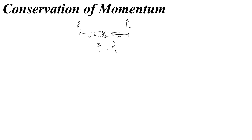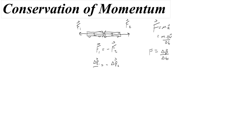Earlier we talked about how Newton's second law, F equals ma, can be thought of as not acceleration, but instead a change of velocity over a change in time. Mass times the change of velocity is a change in momentum. So force can be thought of as the change in momentum over the change in time. We rewrite our equation of F₁ and F₂ with delta P's: the change in momentum of the first car over time equals the negative change in momentum of the second object. Since the collision time is the same for both, we can cancel it, leaving delta P₁ equals negative delta P₂.